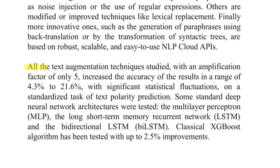The author mentions that all text augmentation techniques studied, with an amplification factor of only 5, increase accuracy in the range of 4.3% to 21.6%. All of the techniques kind of give an average accuracy boost from 4.3% to 21%, which is a huge boost. The author tested all of this on a text polarity task — sentiment analysis — where given a sentence you classify it as positive, negative, or neutral.